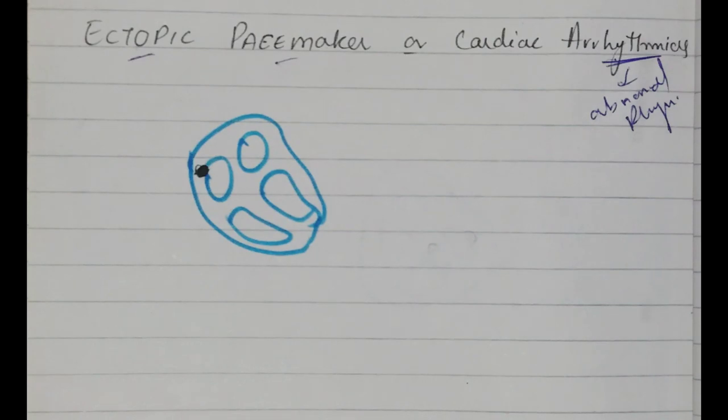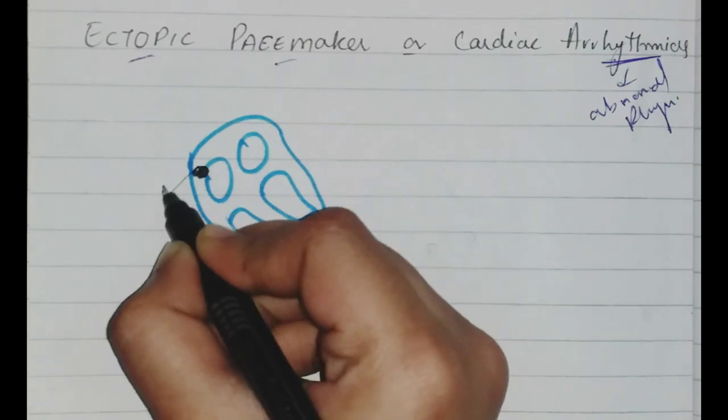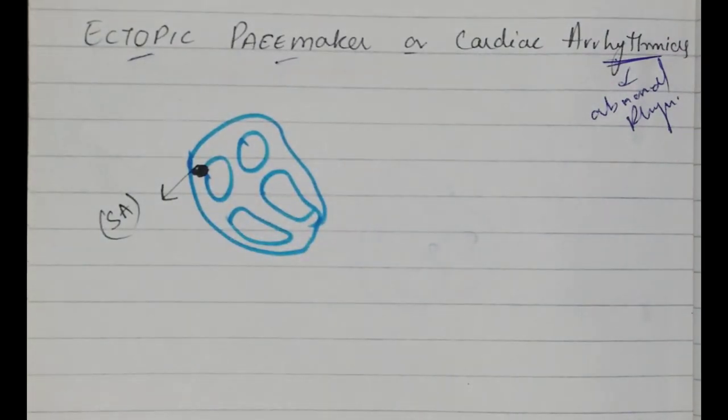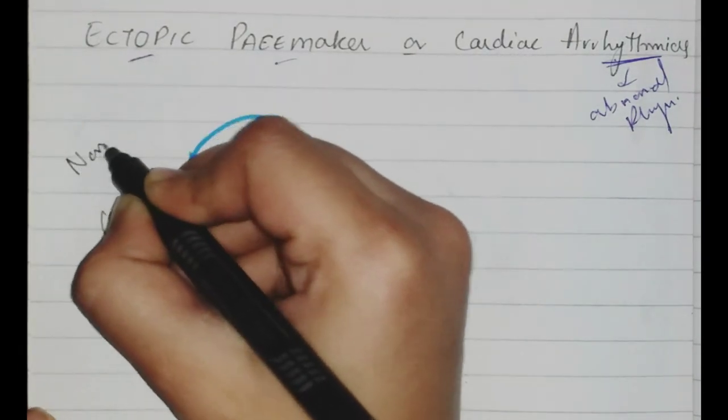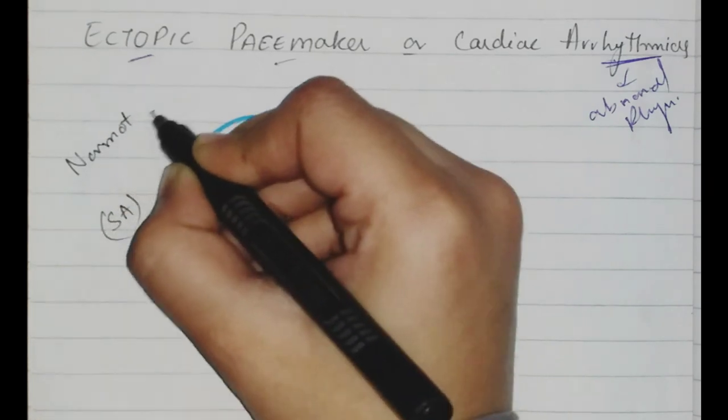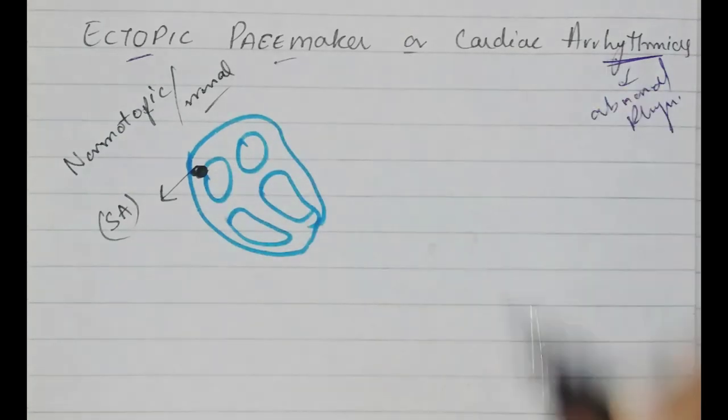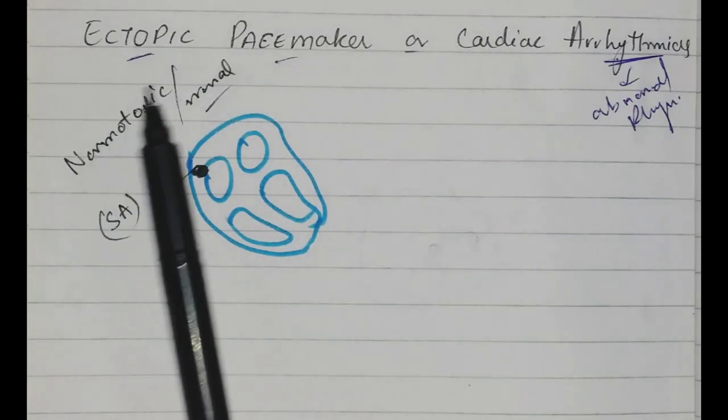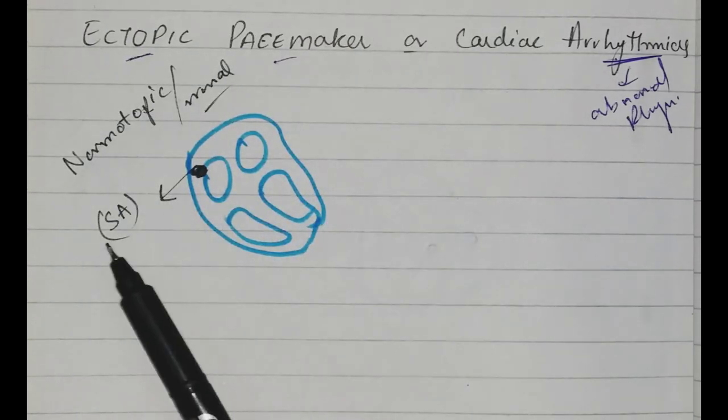If we normally have such a node which generates impulses, we call it sinus rhythm, meaning normotopic or normal. But in the heart there are some changes. Now we don't talk about the changes, we are just discussing what is ectopic pacemaker.